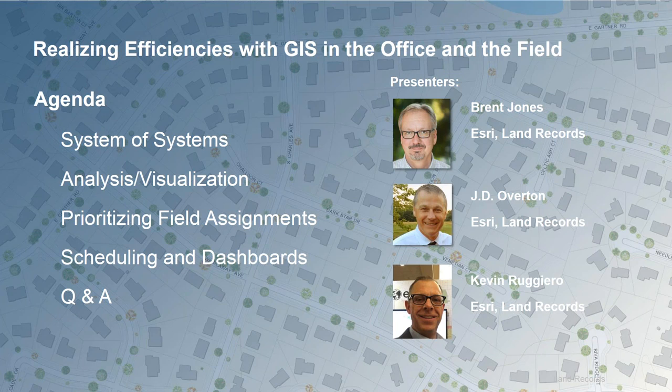I'm Brent Jones, a Land Records Industry Manager here at ESRI. We've got a couple of really sharp presenters today — J.D. Overton and Kevin Ruggiero — who will discuss how to use your GIS to identify areas or properties that require additional review and may warrant a field visit. We'll discuss how to prioritize, schedule, and execute work in the field using the ArcGIS platform. We'll be recording this today so you can refer back or forward it to a colleague. Past webinars are recorded also if you'd like to access them.